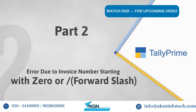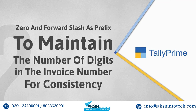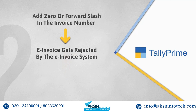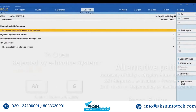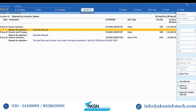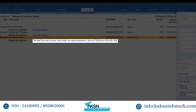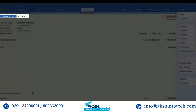Now let us see the error that occurs due to an invoice number starting with zero or forward slash. You may be adding zero or forward slash as a prefix to maintain the number of digits in the invoice number — for example, entering the invoice number as '0245'. In such a case, when you try to generate an invoice, it will be rejected by the e-invoice system. Open 'Rejected by e-invoice system' in the e-invoice report and drill down to the transaction with reason for rejection: 'The field document number must match the regular expression'. Remove the zero from the invoice number and save. You can alter the invoice number only when the method of voucher numbering is set to manual in the voucher type master.